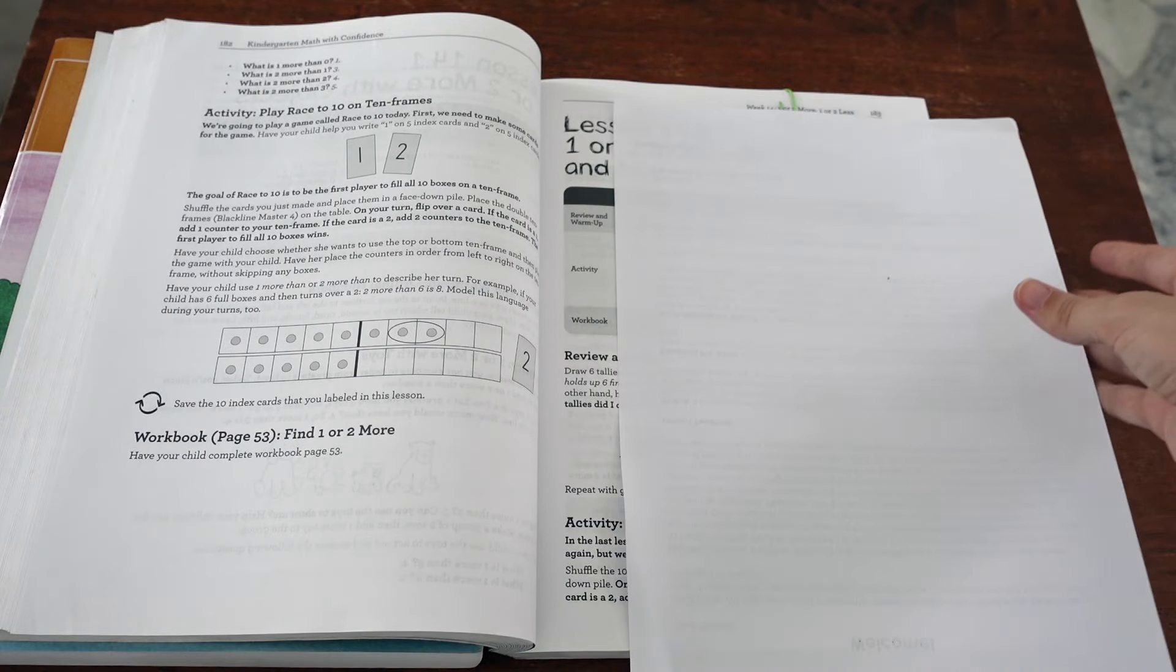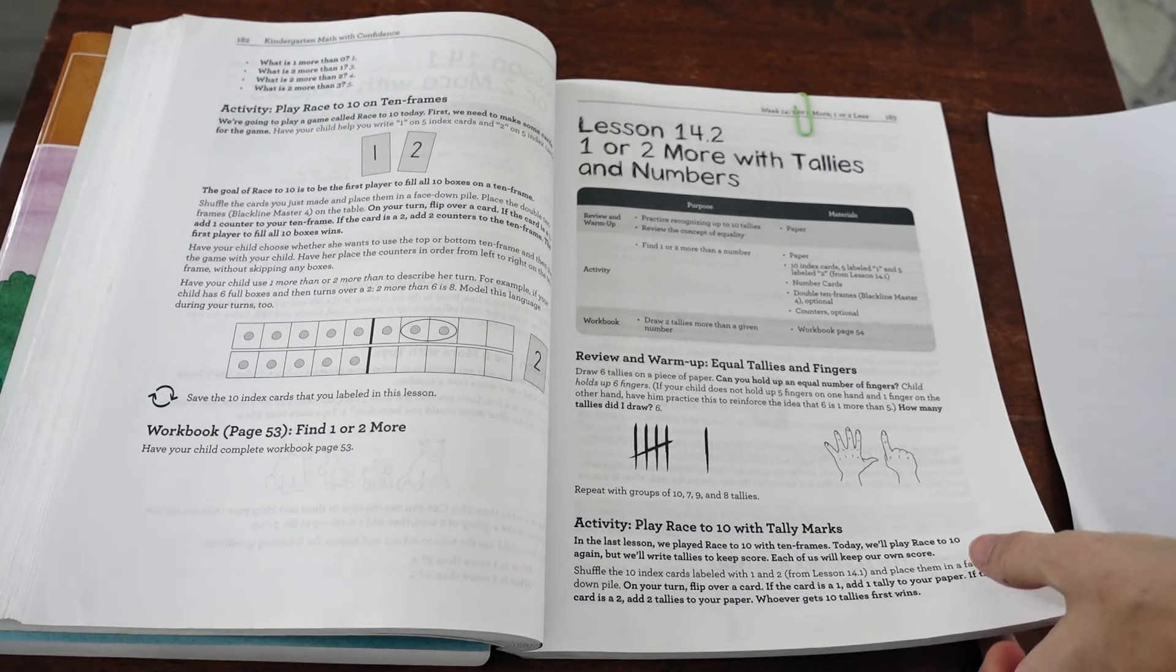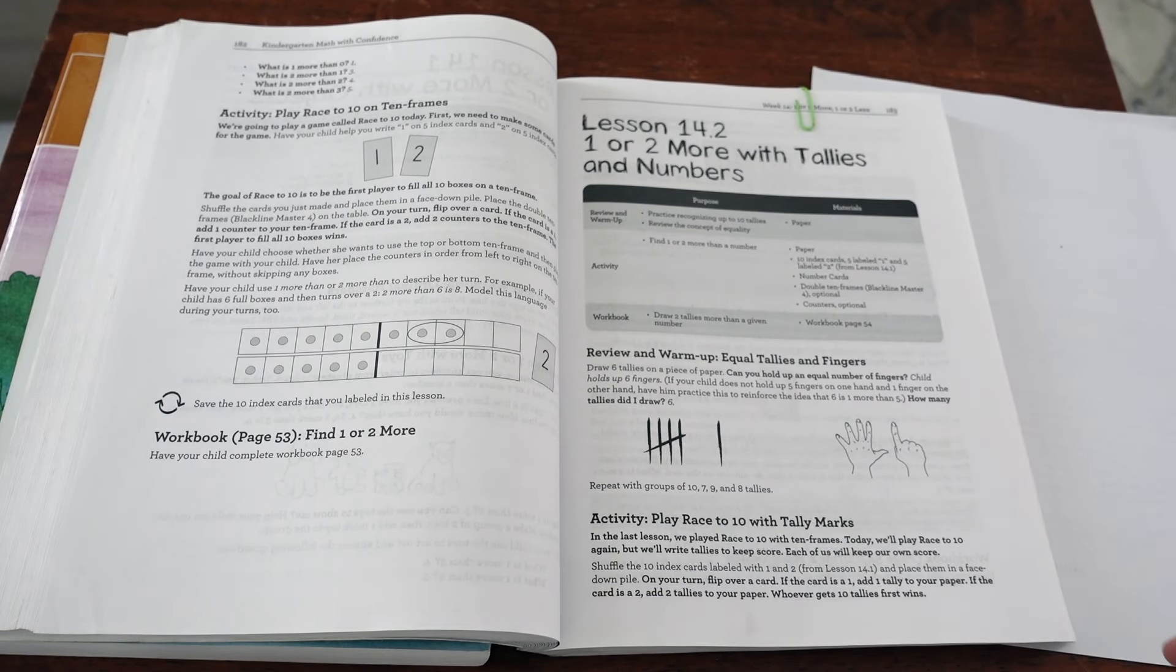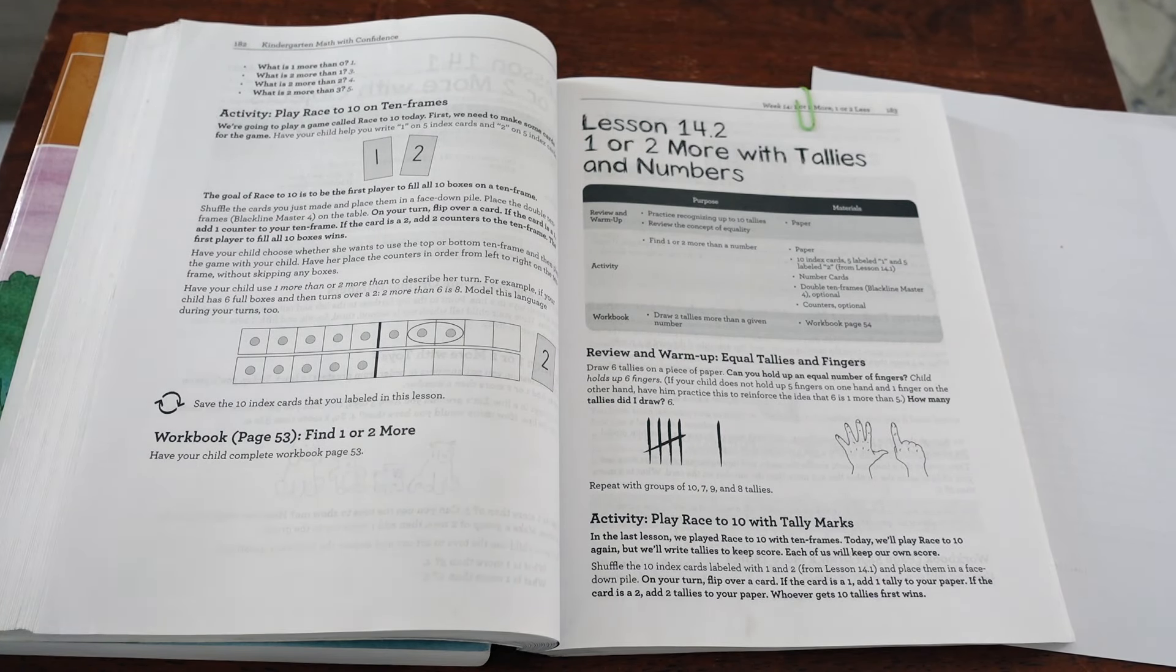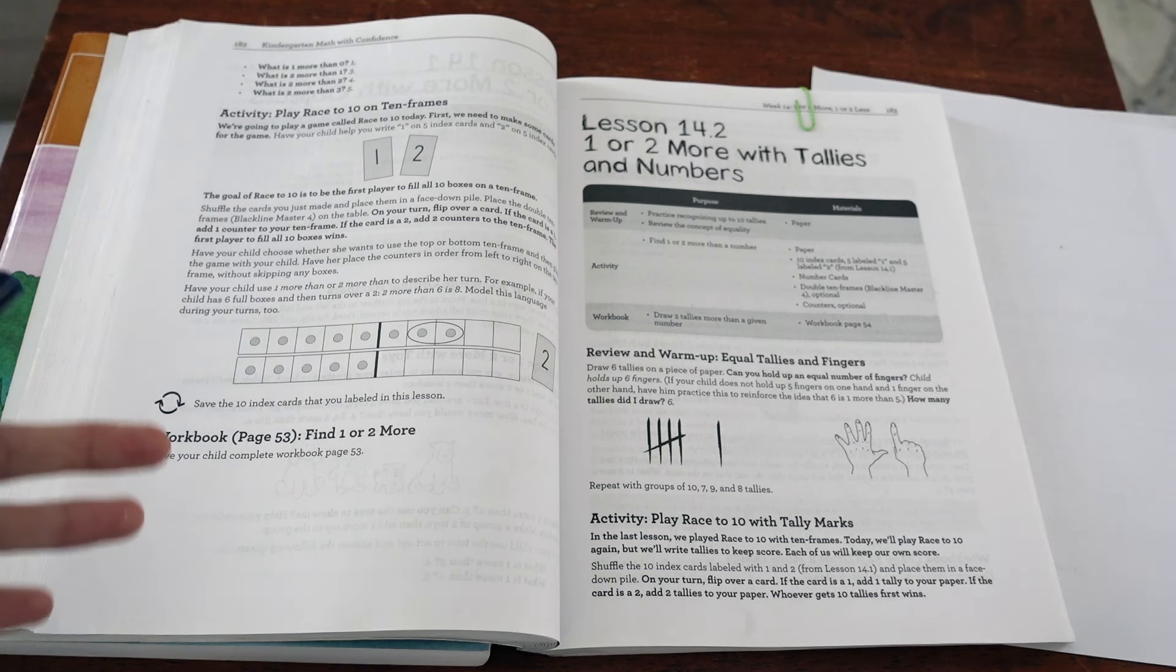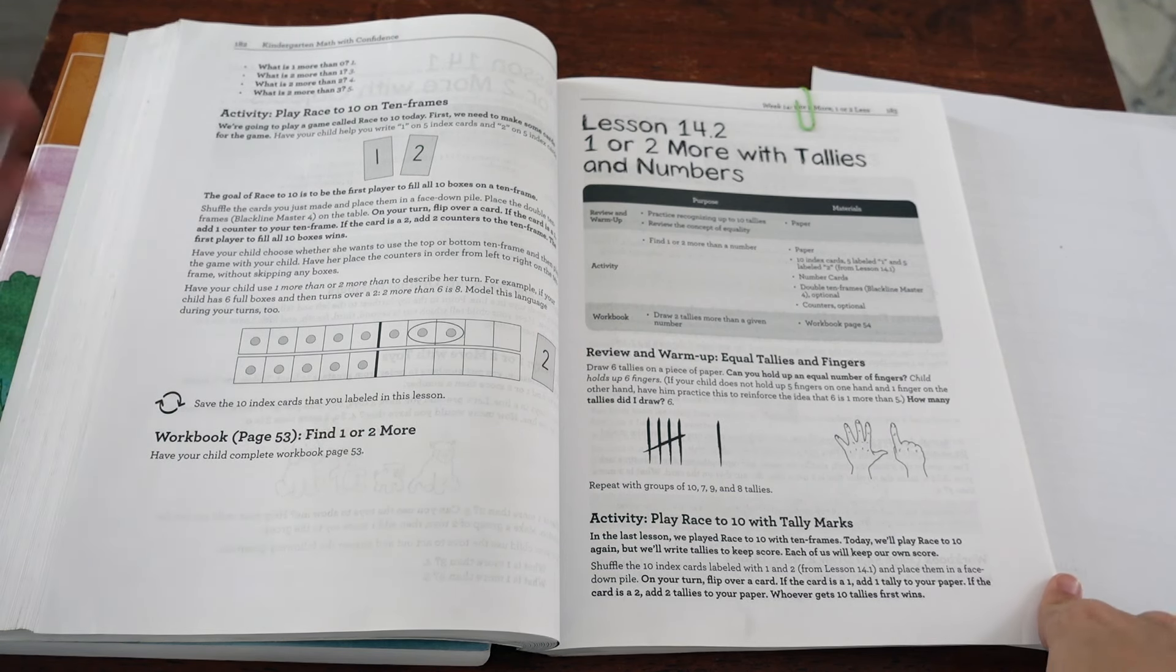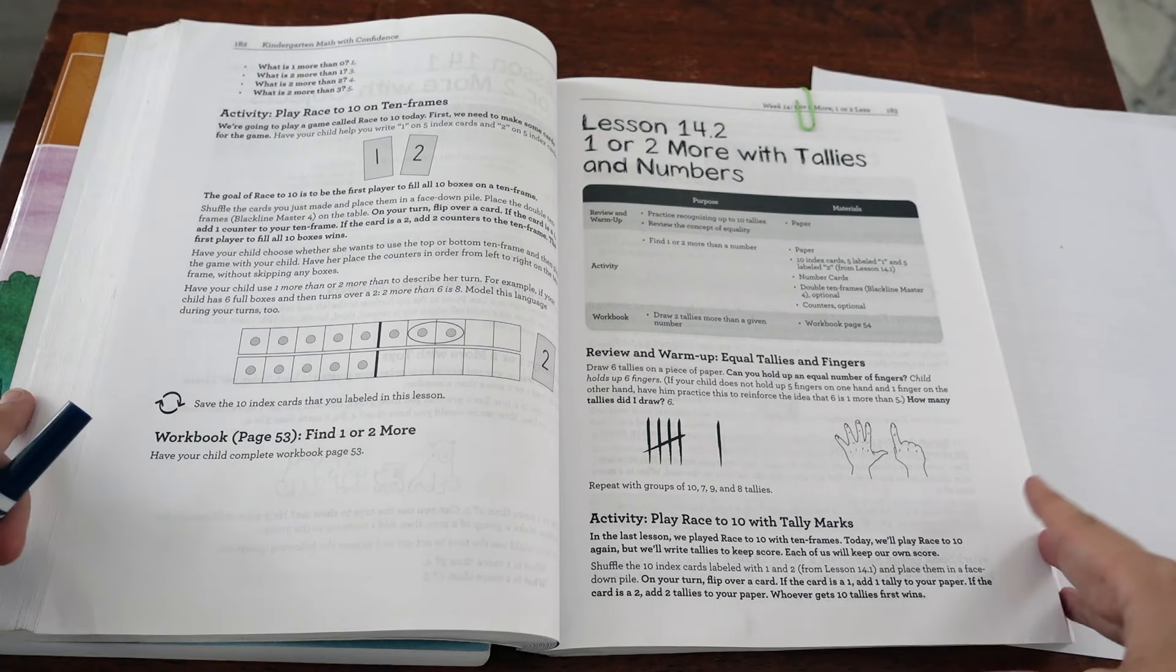This is just random scrap paper. A homeschoolers secret weapon is having a cupboard or a shelf with random scrap paper on it at all times. And I do my school at our dining table. And if you've seen me do school, you know that my dining table is kind of surrounded by shelves of books and supplies. Everything I need for homeschool is either within reach of the dining table or a couple steps away. So it's all very easy to access.